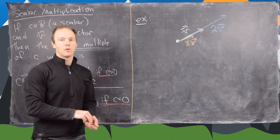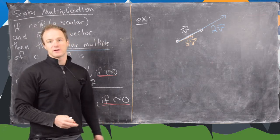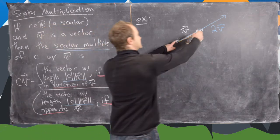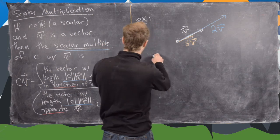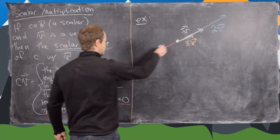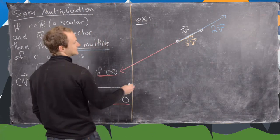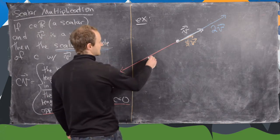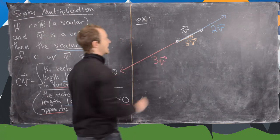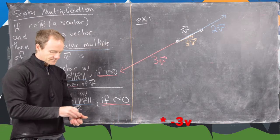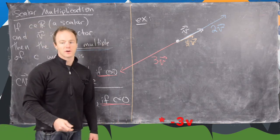Now what about half times v? So that would have the same direction, but it would have half the length. So we could write that maybe like this, 1 half v. And then what about negative 3 times v, for instance? So here we have 1, 2, 3. So it's going to be way back in this direction. So it's opposite the direction and 3 times the length.